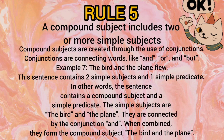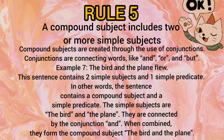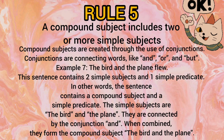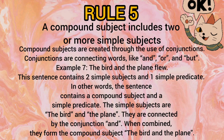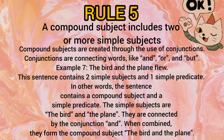Rule number 5: A compound subject includes two or more simple subjects. When there are two subjects, we use conjunctions — connecting words like 'and,' 'or,' 'but,' 'because,' 'if' — to join them. For example, 'The bird and the plane flew.' Here, 'and' is the conjunction, 'bird' and 'plane' are both subjects, and 'flew' is the predicate.